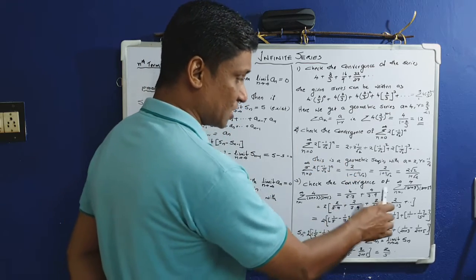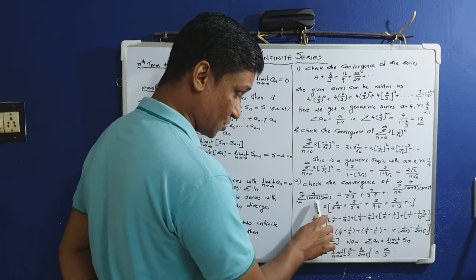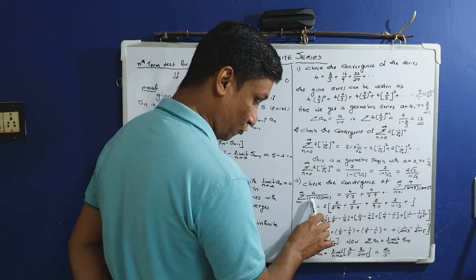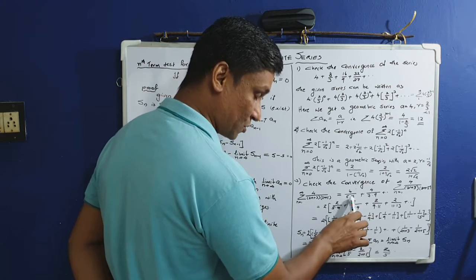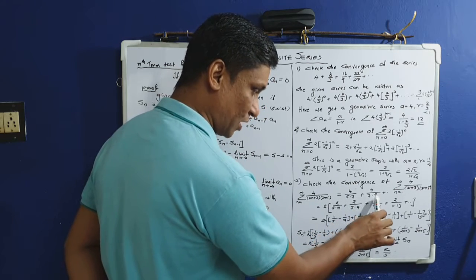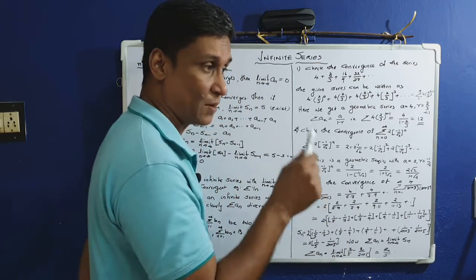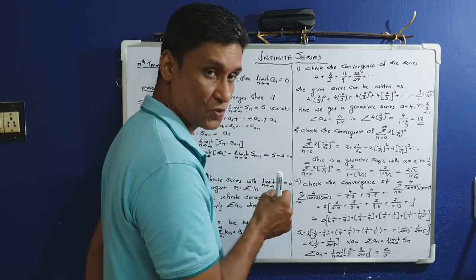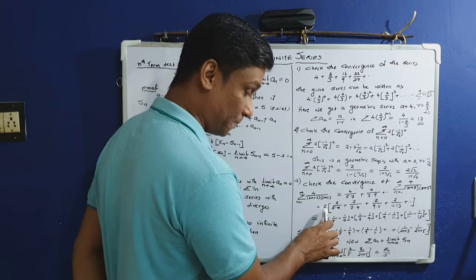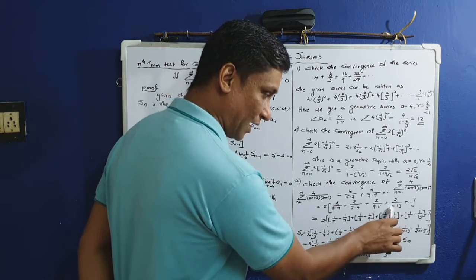Problem 3: check the convergence of sigma from n=1 to infinity of 4/((2n+3)(2n+5)). Expanding the first few terms: 4/(5·7) + 4/(7·9) + 4/(9·11) + ... This is not a geometric series. We use partial fractions. We can write 2/((2n+3)(2n+5)) = 1/(2n+3) - 1/(2n+5), so the series becomes 2·[1/5 - 1/7 + 1/7 - 1/9 + 1/9 - 1/11 + ...].